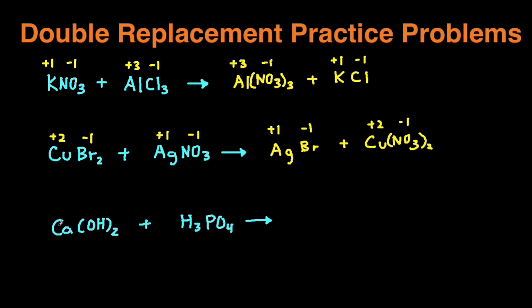The last example: same steps again. First, write the charges. Calcium is in the second column of the periodic table, so it's going to have a positive two charge. Hydroxide is a polyatomic ion with a negative one charge. H is just positive one because it's in the first column of the periodic table. PO4 is a polyatomic ion with a negative three charge. Then we take our two positive ions and switch places. We replace them with each other.